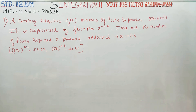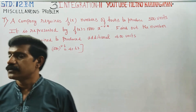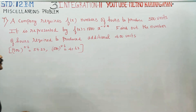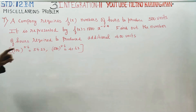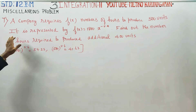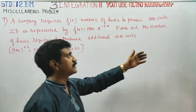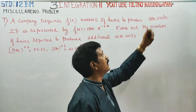Dear 12th standard business mathematics students, in chapter 3 integration part 2, miscellaneous problem 7: a company requires f(x) numbers of hours to produce 500 units.